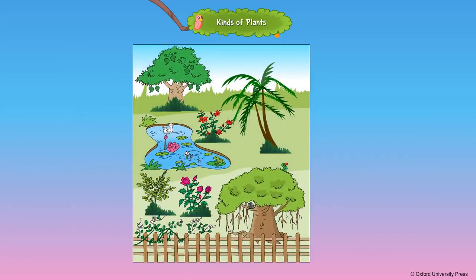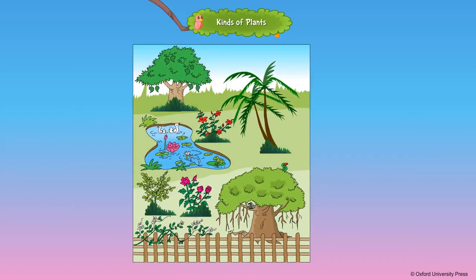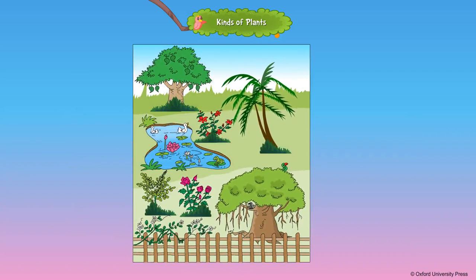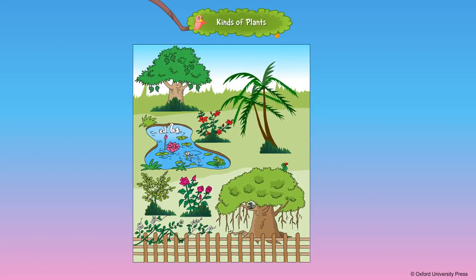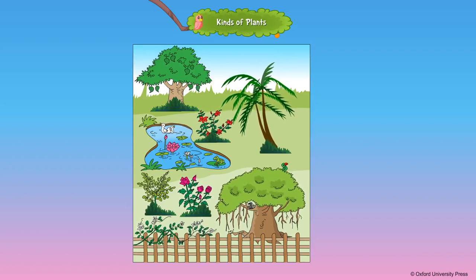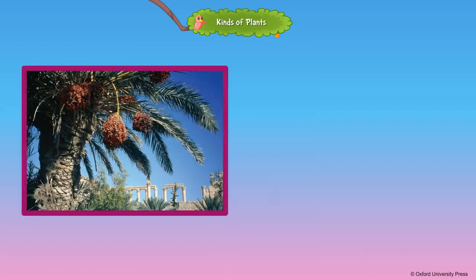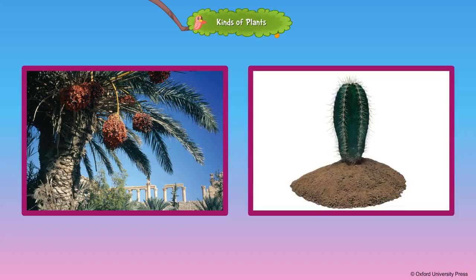Plants are living things. They grow and breathe. Sunlight, air, water, and food help plants grow. Some plants live on land, and some plants grow in water. Plants that grow in deserts are called desert plants.